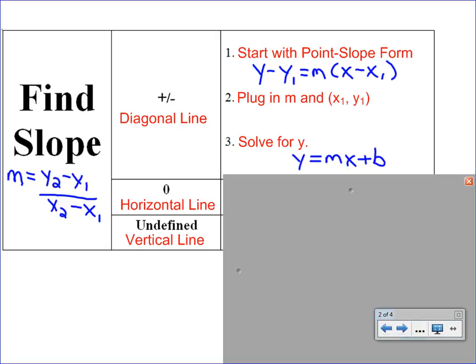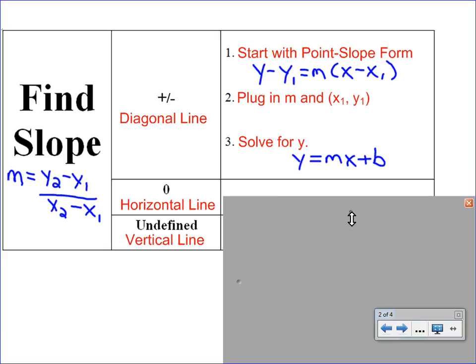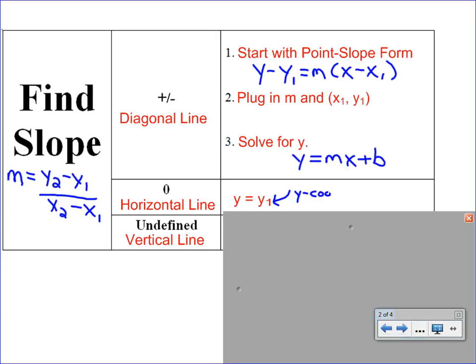What happens if you get a slope of zero? Then you have to go back to how to write the equation for a horizontal line. That is the line where all the y values are the same, so it's simply y equals y1 — just your y coordinate. And you'll have that because you have two points.